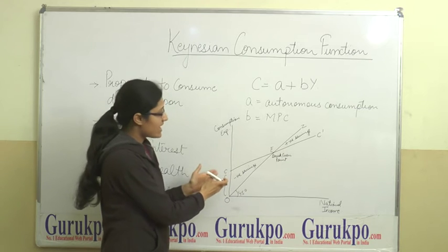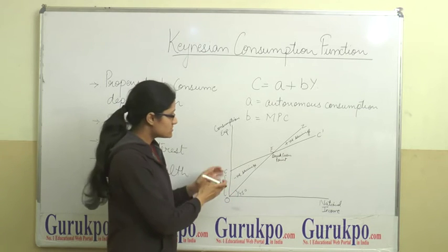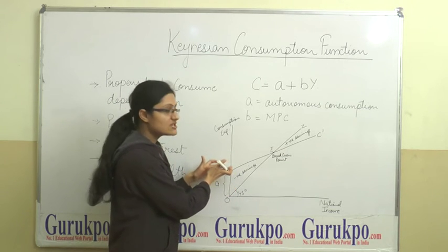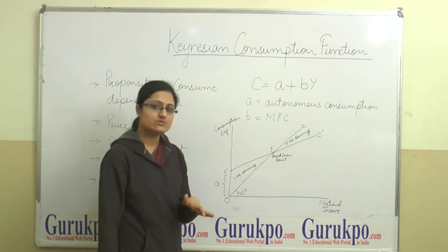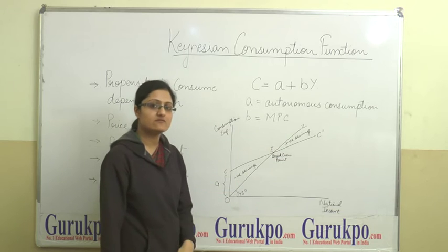Now before point E we have negative savings because at this part consumption is greater than our income. Therefore we are not able to save and this portion shows the negative savings.